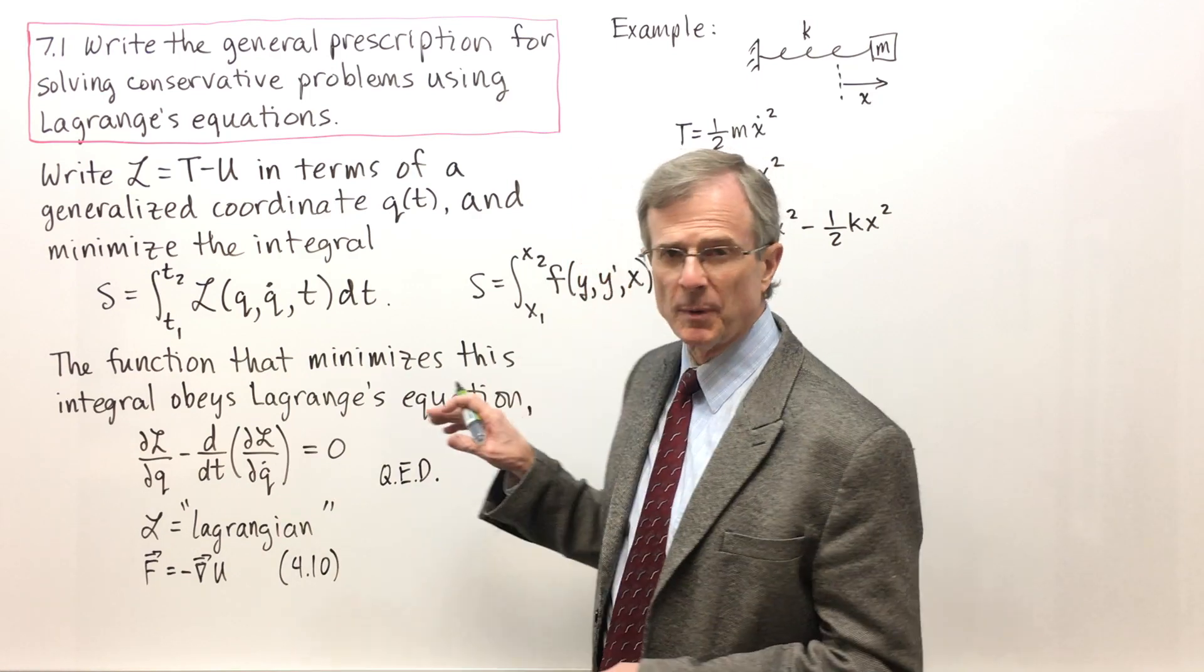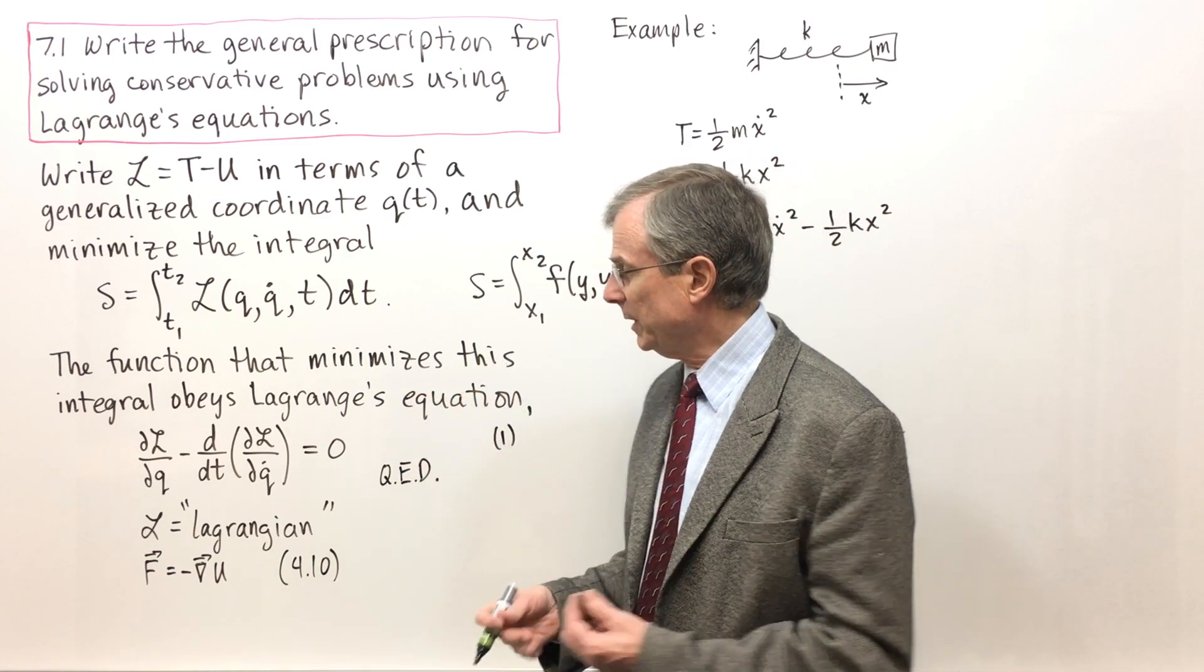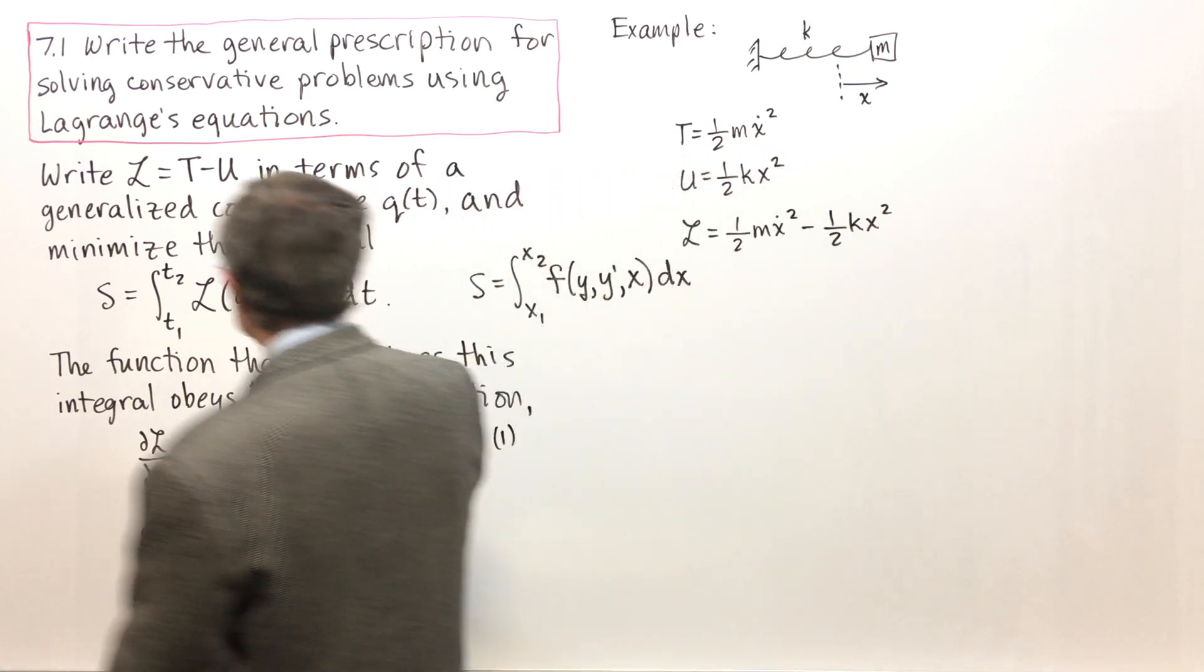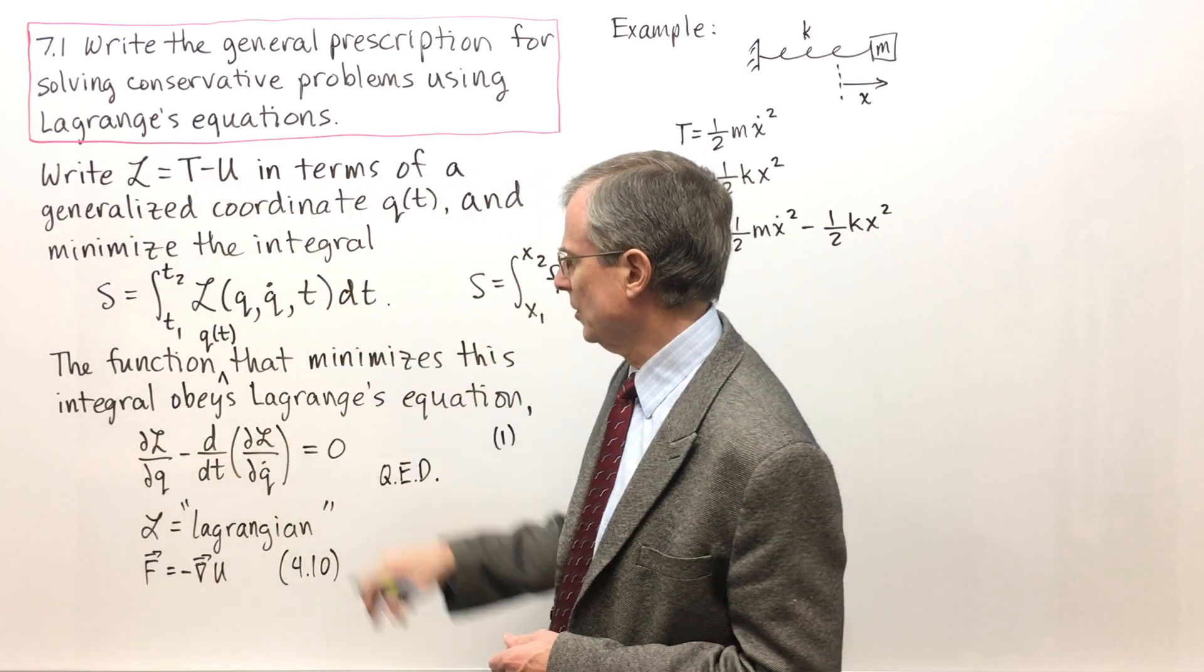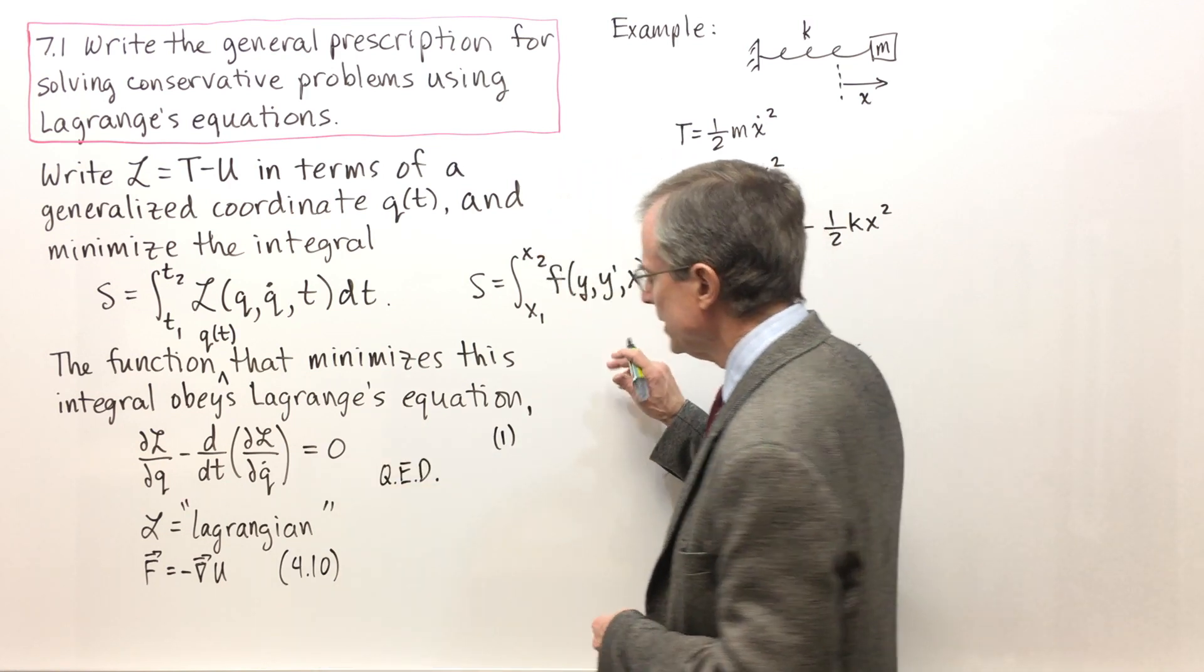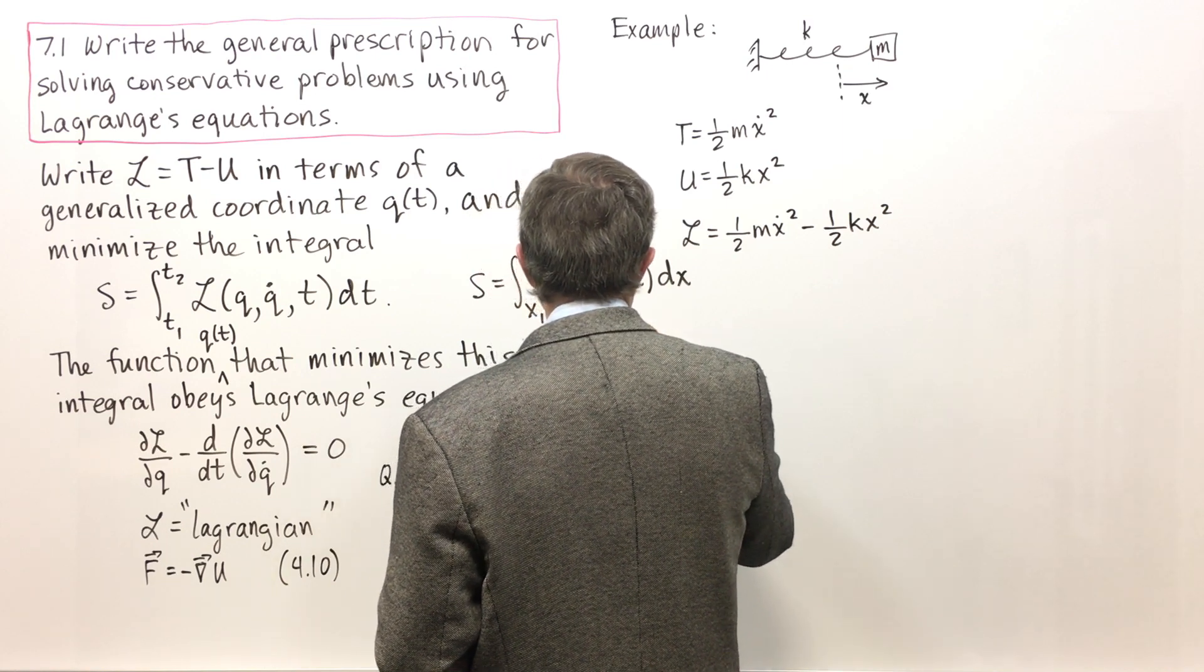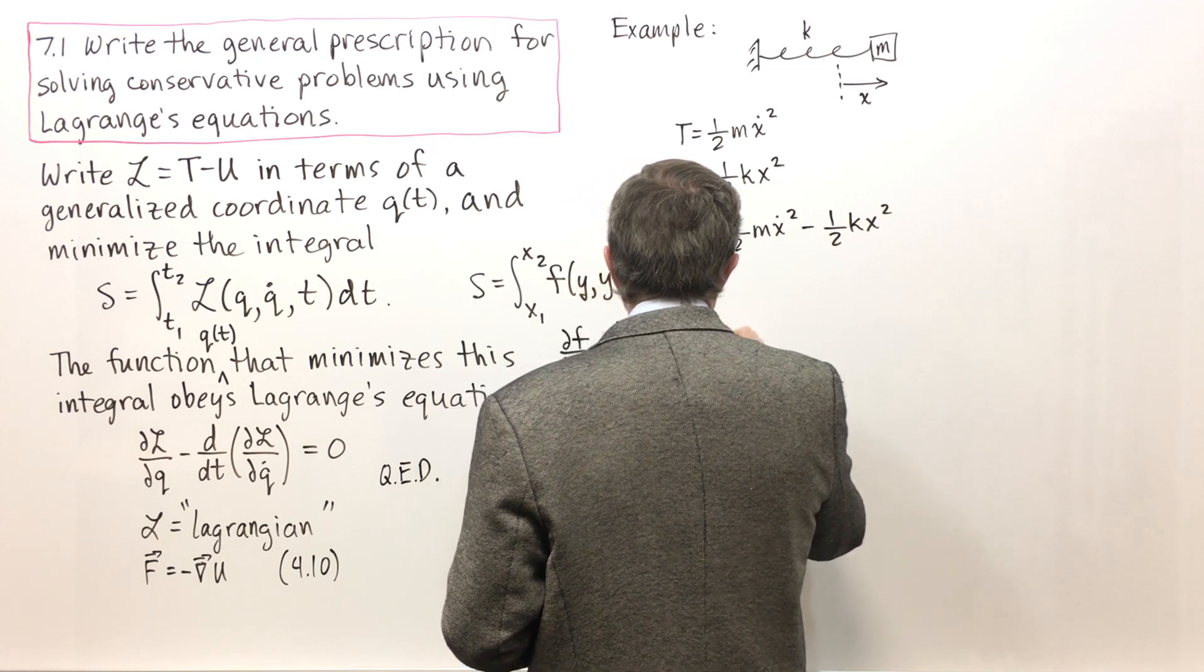We know how to solve this problem. We know how to extremize this integral from Concept 6.1, and the way we can extremize it is with the Euler-Lagrange equations. Namely, the function Q, in this case it's Q of T, that minimizes this integral, obeys Lagrange's equation. The Euler-Lagrange equation for this one was df by dy minus d by dx of df by dy prime equals 0.